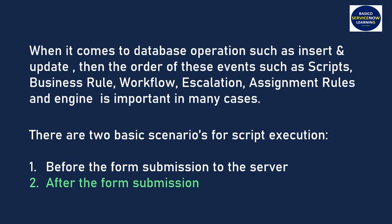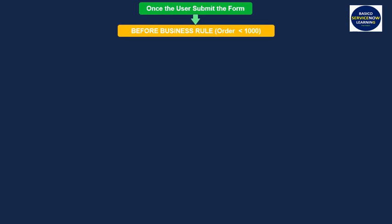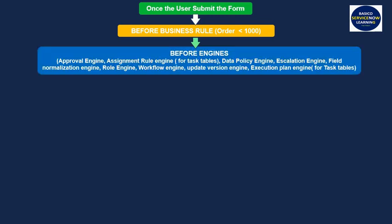Once the user submits the form, before business rule scripts with order less than 1000 get executed first. Before business rules are basically scripts configured to execute before the database operation. After that, before engines — that is the approval engine, assignment rule engine, data policy engine, escalation engine, field normalization engine, role engine, workflow engine, update version engine, and execution plan engine — get executed.